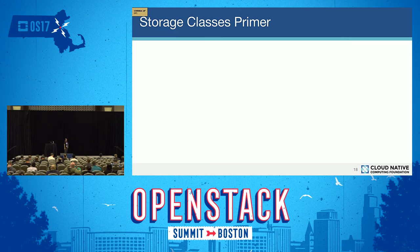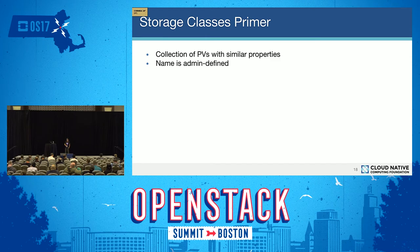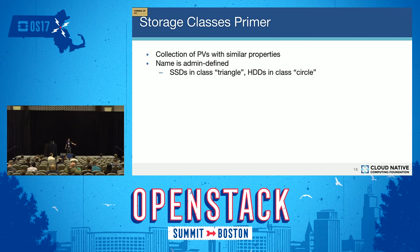A related topic is storage classes — another API object in Kubernetes. It represents a collection of persistent volumes with similar properties, and the name of the storage class is defined by the administrator. For example, as a cluster administrator, I can define a storage class called 'triangle' containing SSDs, and a second storage class called 'circle' containing hard drives. The names and what they contain is completely up to the administrator.